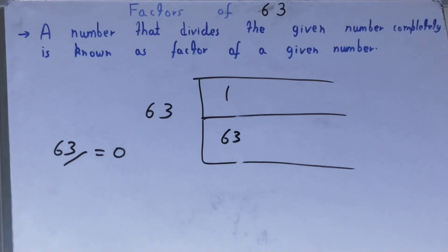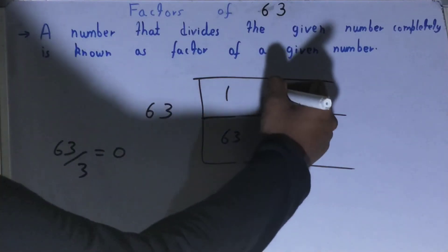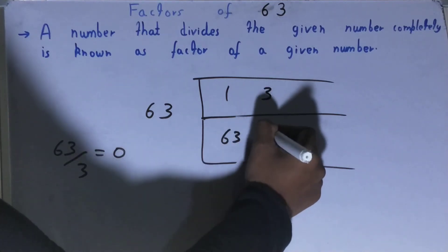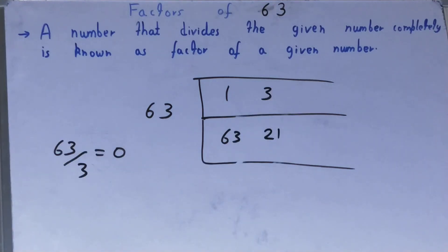After 1 comes 2. If we divide 63 by 2, will you get the remainder zero? The answer is no. Let's try with the next one, which is 3. If we divide 63 by 3, will you get the remainder zero? Yes, so 3 is a factor. And 3 times what is 63? 3 times 21 is 63. So 21 is also a factor.